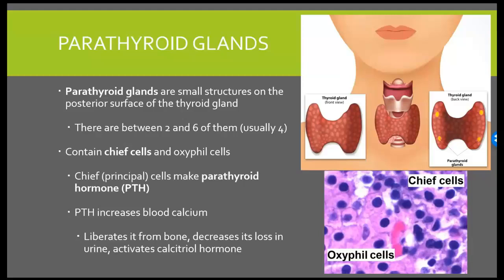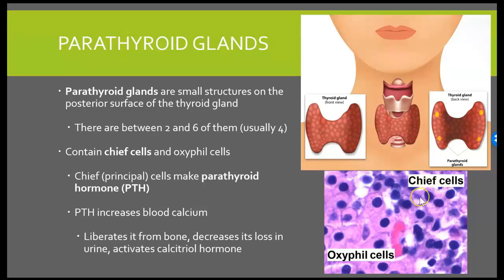Now let's move into our parathyroid gland. We can see our thyroid gland, our little bow tie here in the neck. But if you look posterior to that, you could see these small structures on the posterior aspect of our thyroid gland — those are our actual parathyroid glands. There are typically between two and six of them, but on average each individual has about four. If we look at a histology slide, we can see our chief cells, which are the darker purple cells, and also the oxyphil cells, which are the lighter pink ones.